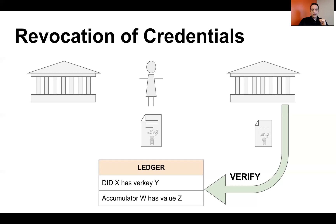The second thing on the ledger that is part of the verification process is something called an accumulator. An accumulator is basically the answer to a math problem, and that math problem has been communicated to the holder of the credential by the issuer in advance. The proof that gets generated by the holder refers to that math problem, and the relying party can check to see whether the math problem still has the answer that they expect — which proves that the holder of the credential is holding something that has not been revoked.